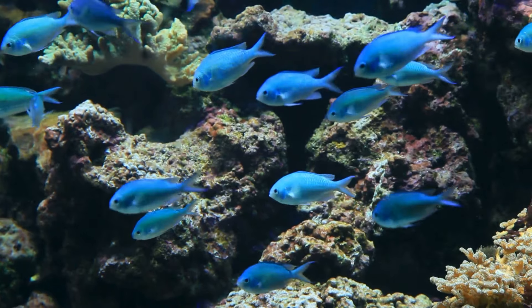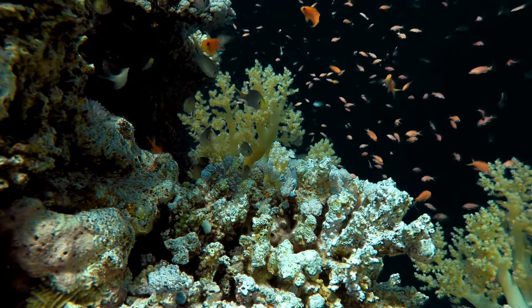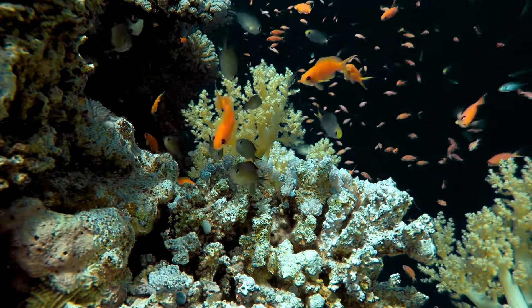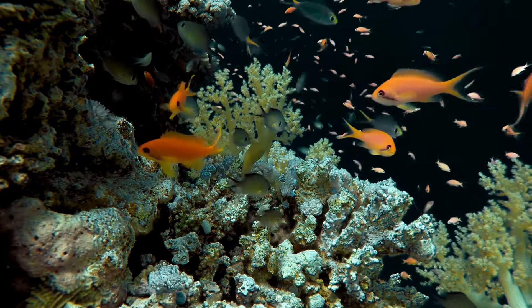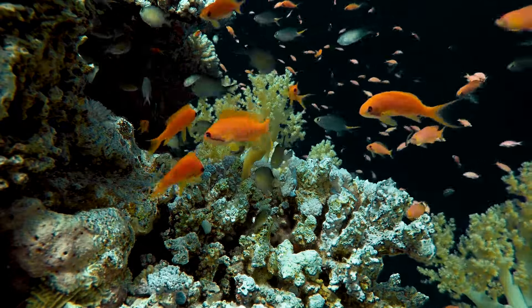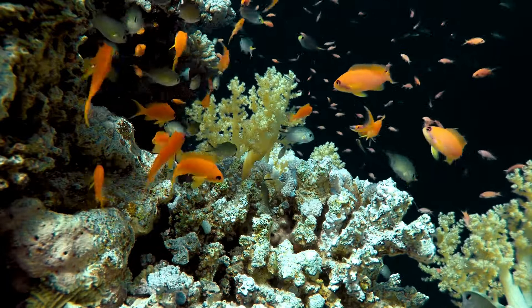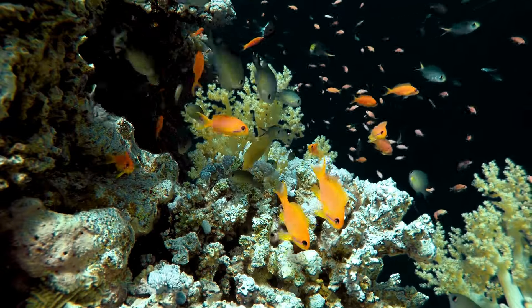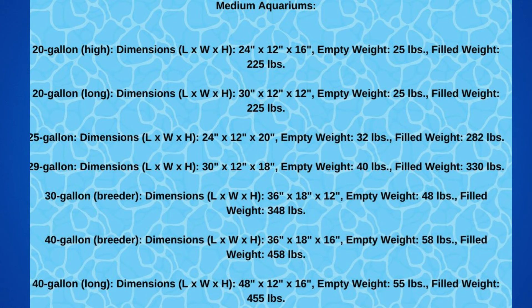Number 2: Substrate and Decorations. Gravel, rocks, and decorative elements add additional weight to the aquarium. Consider the combined weight of substrate and decorations when calculating the total load on your aquarium's stand or support surface. Number 3: Equipment Weight. Filtration systems, heaters, and lighting fixtures contribute to the overall weight of the aquarium's setup. Ensure that the supporting structure can withstand the combined weight of the tank and equipment.